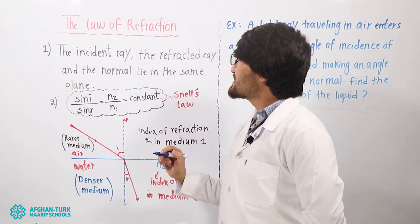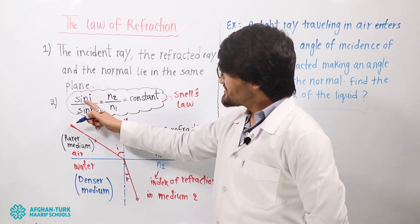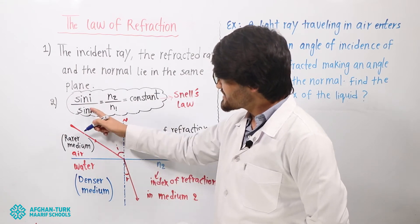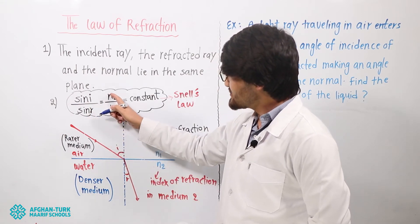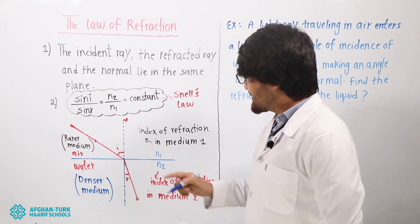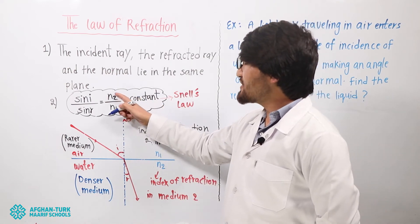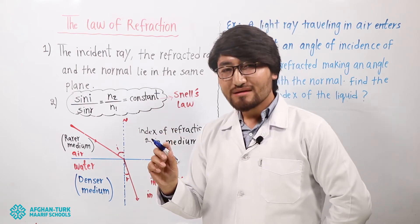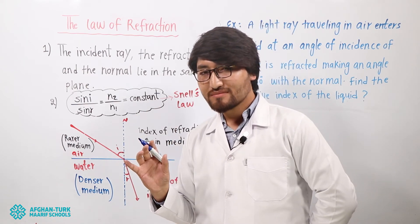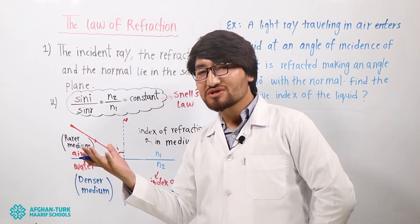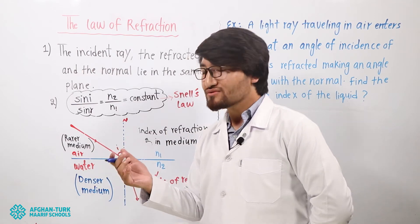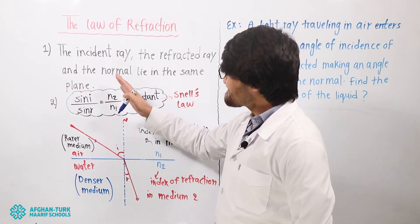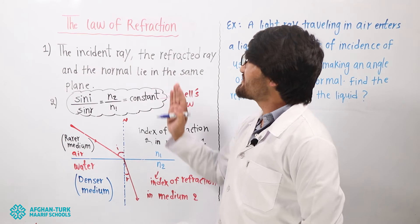And number two: the ratio sine i over sine r is equal to n2 over n1, and it is constant. If we divide n2 over n1, we get a number — maybe 2, 3, 4, or the square root of 2. It is a constant number. This is the second law of refraction.